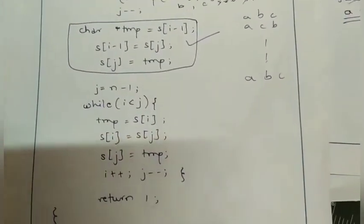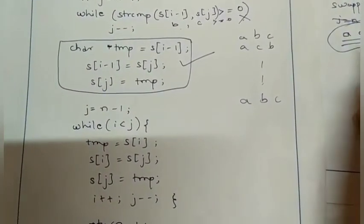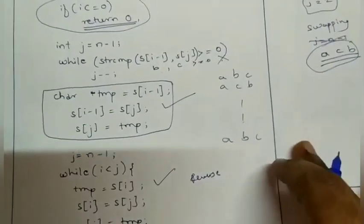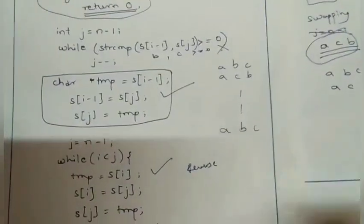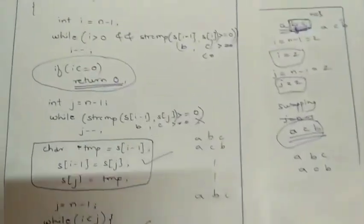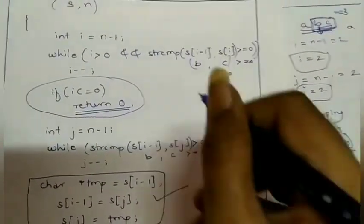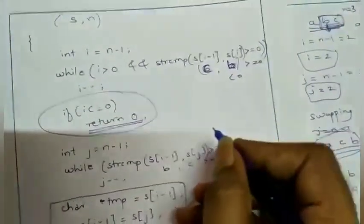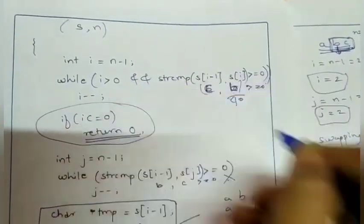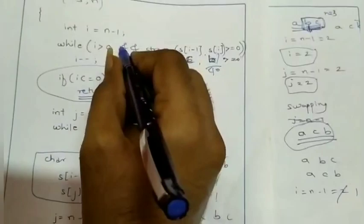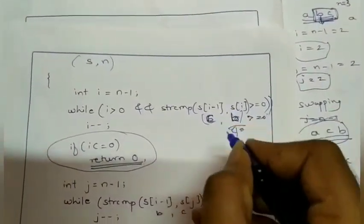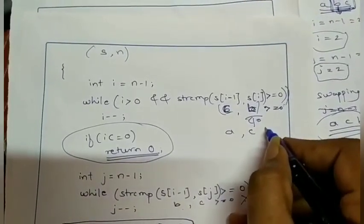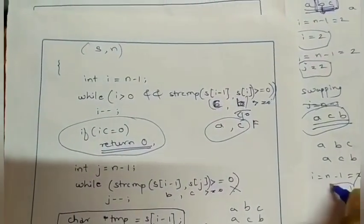Now comes the reverse step — we reverse the portion of the array after position i-1. After this, a c b gets printed as the second permutation. In the next call, our i is equal to n minus 1 which is 2. s[i-1] is c and s[i] is b, so the while condition is true. i decrements and becomes 1. Then we compare s[0] which is a with s[i] which is c — that condition becomes false. So i equals 1.